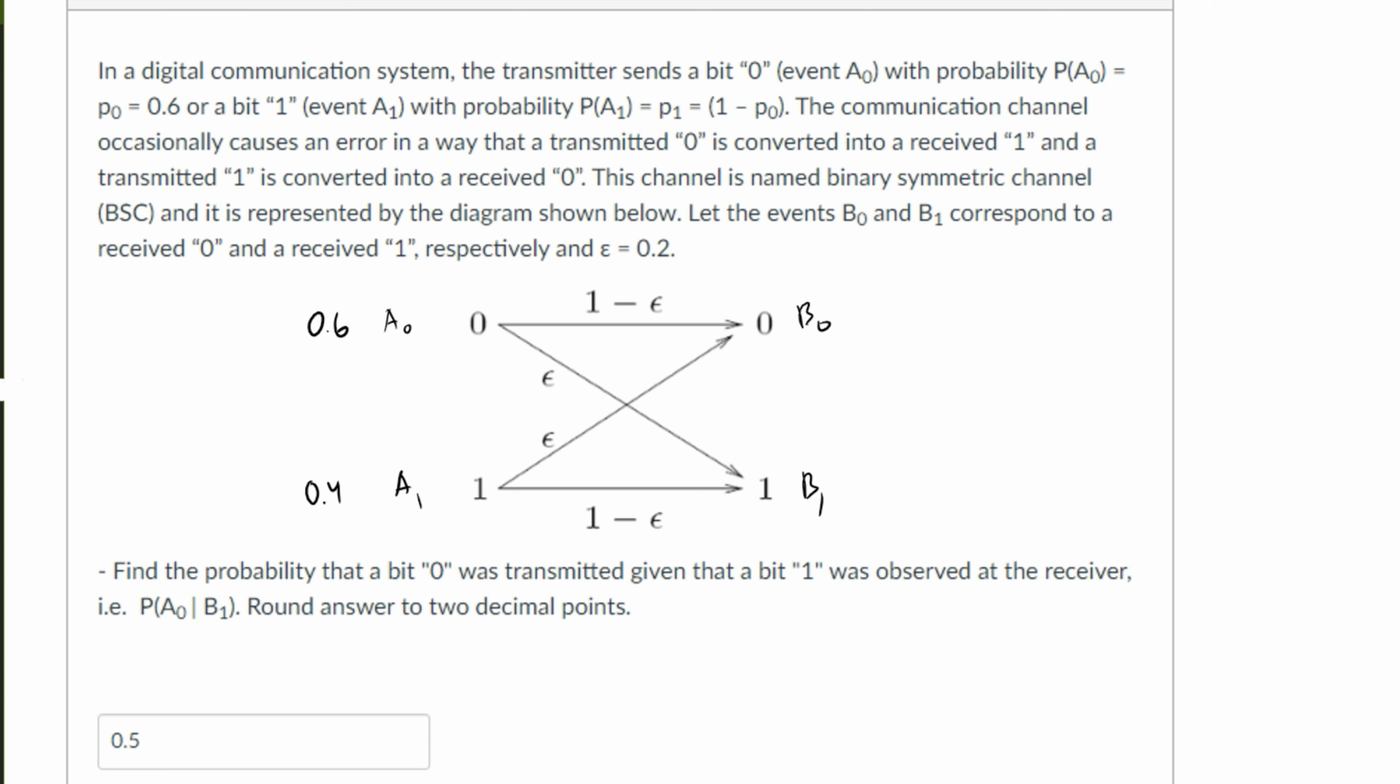Now we want to find the probability that a bit 0 was transmitted given that a bit 1 was observed at the receiver. So we're trying to find the probability of A0 being transmitted given that B1 was received. This is going to be equal to the following equation. This is all we essentially need to remember.